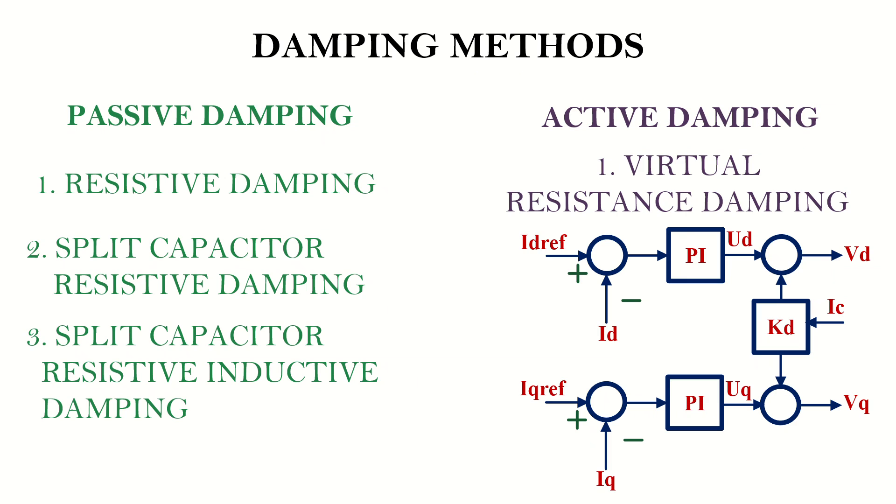This prevents the PWM converter from exciting the resonance of the LCL filter. This approach is equivalent to placing a resistor in series with the capacitor, resulting in similar performance without any additional loss in components.